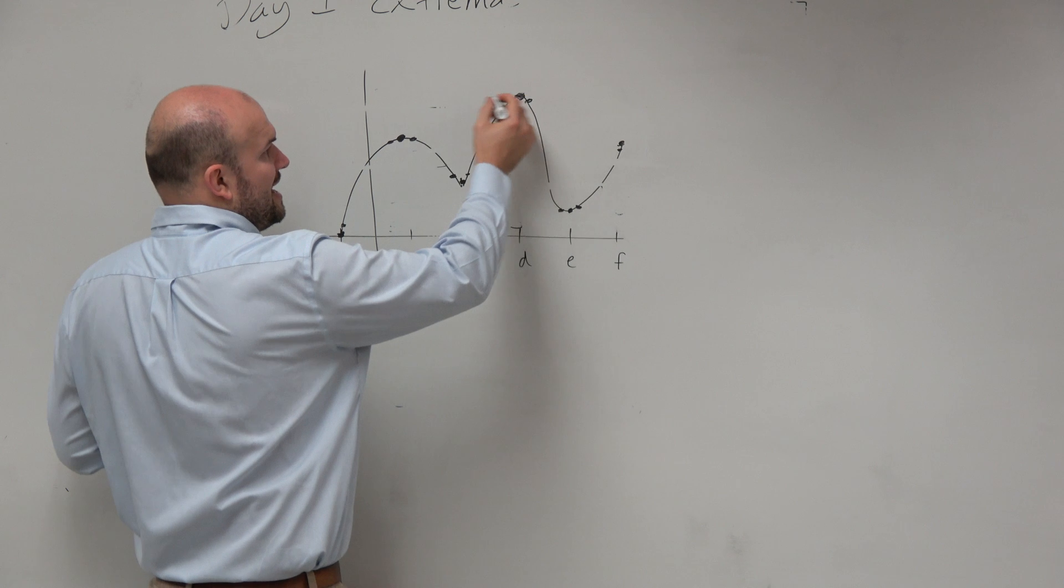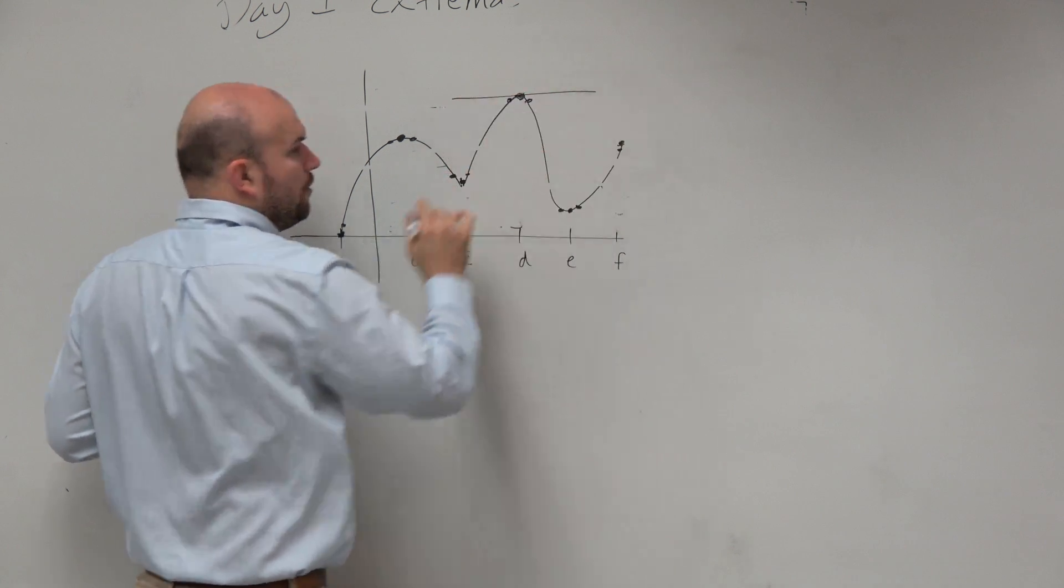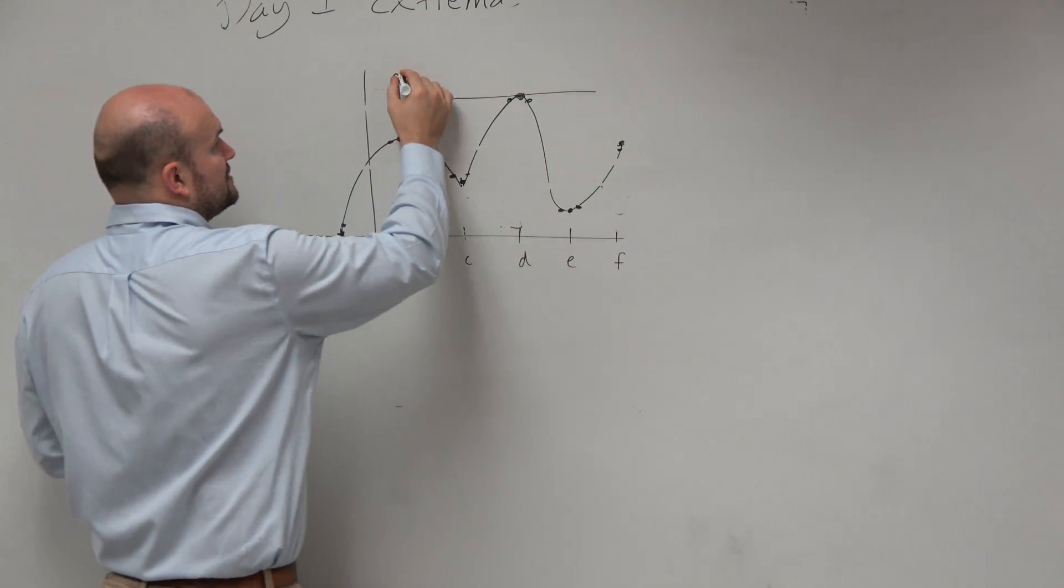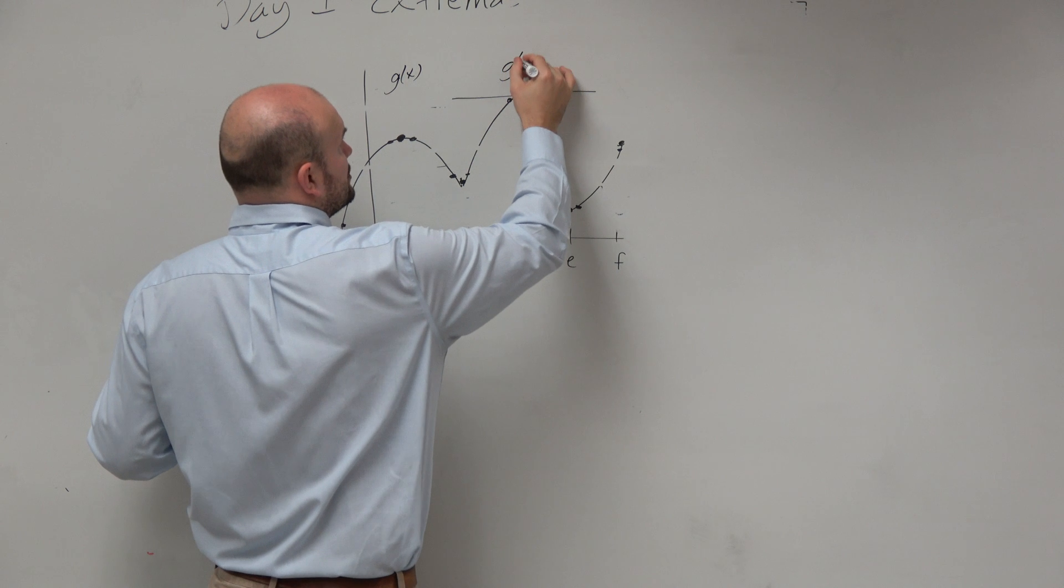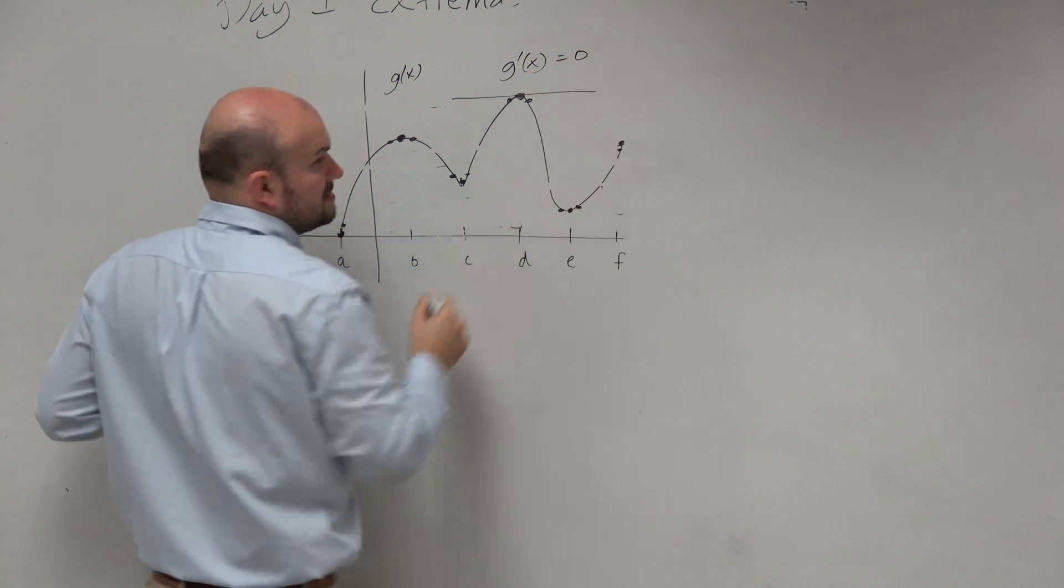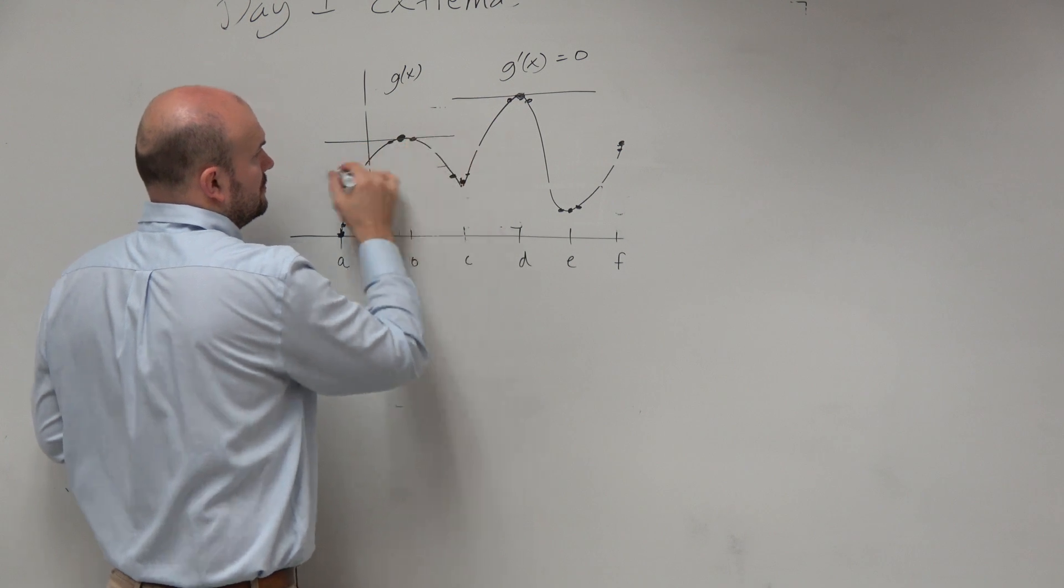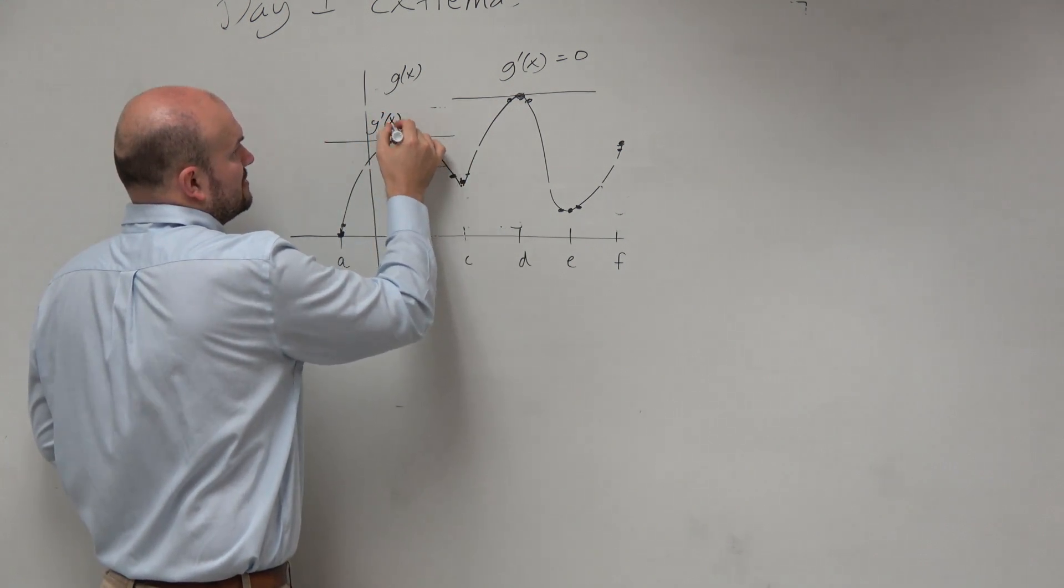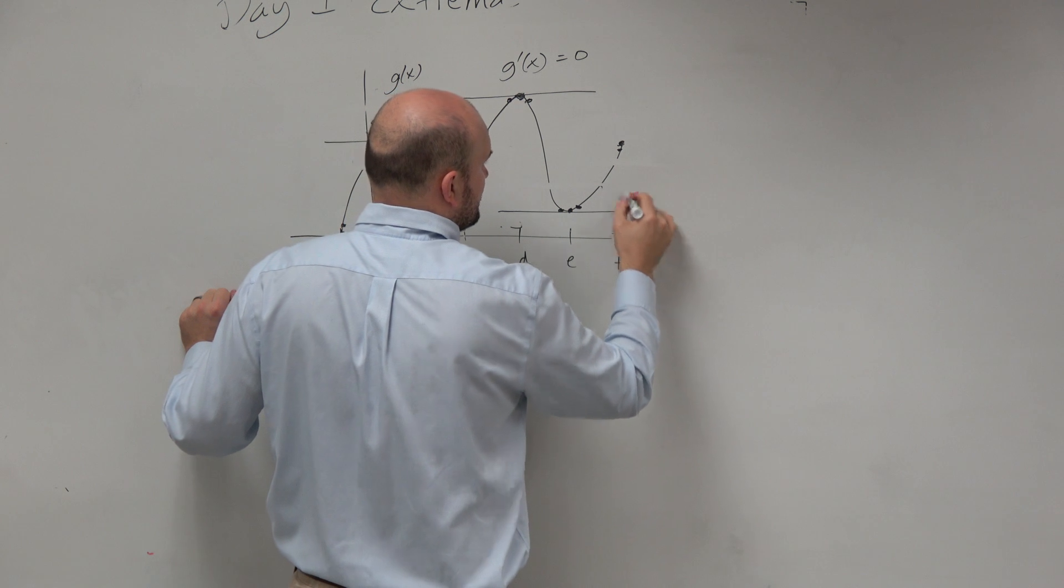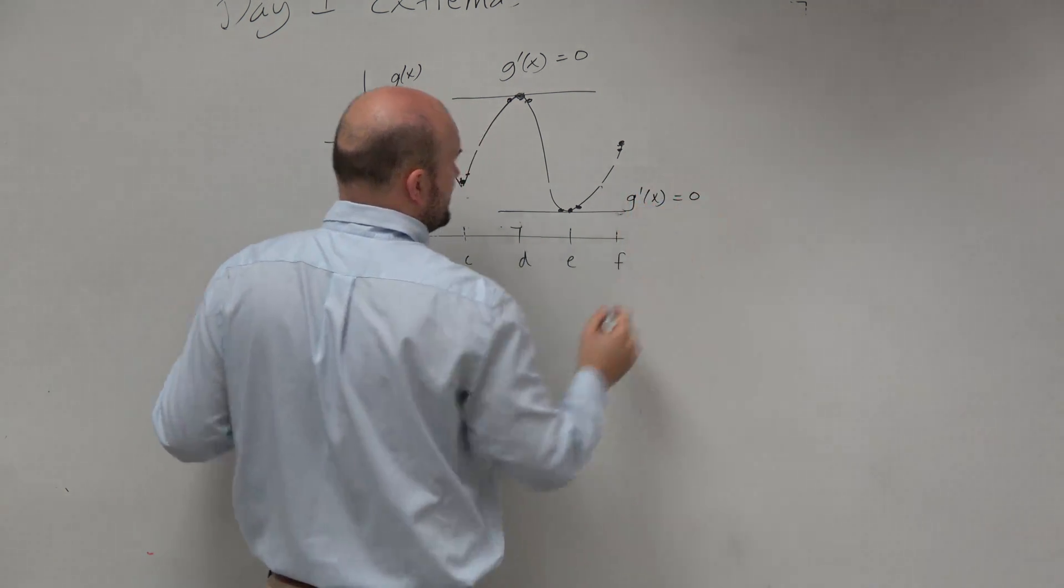Well, if we look at this max, we say that there's a horizontal tangent. So if this is g of x, we know that g prime of x is equal to 0. Here, g prime of x is equal to 0. Here, g prime of x is equal to 0.